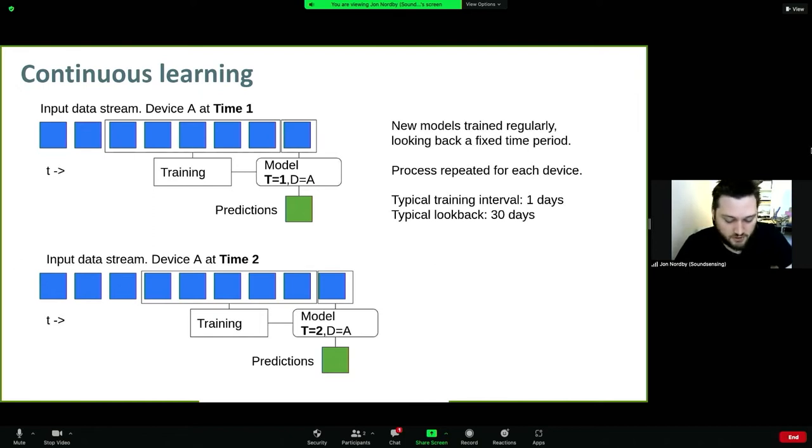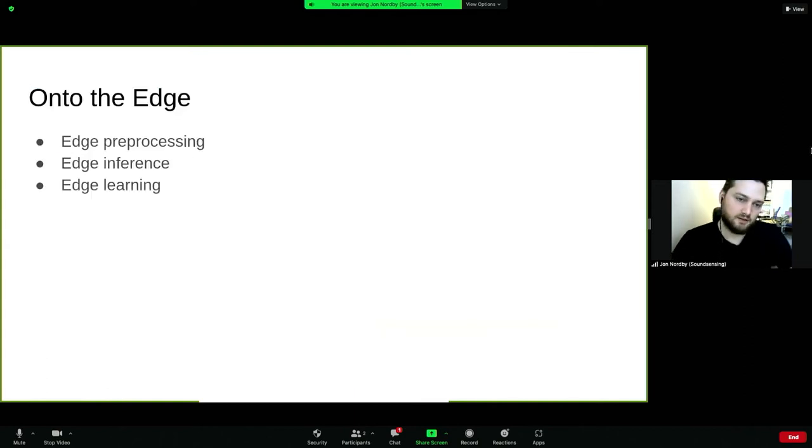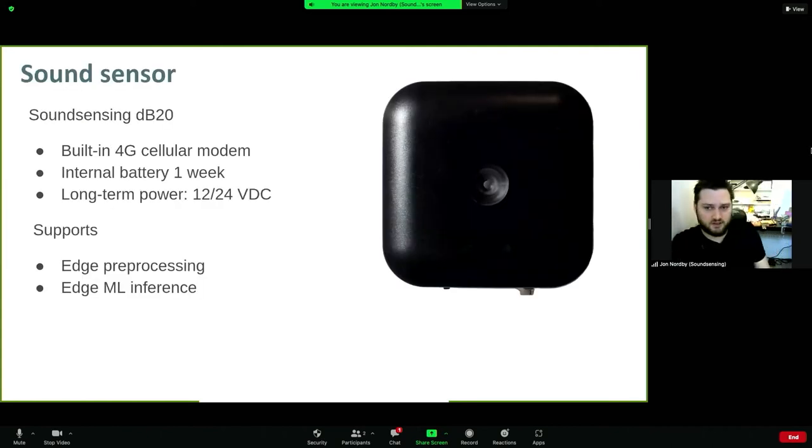So how does the edge fit into this? I'll talk about three aspects of it: edge preprocessing, edge inference where we run some trained model, typically trained in the cloud and then running inference on the edge, and then edge learning - this is very different. It's important to be specific when we're talking about edge AI - what pieces of AI do we use which are on the edge.